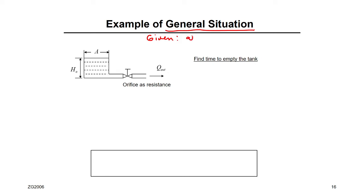So given: at T equal to 0, the head inside the tank equals H₀. It's a number — the elevation.